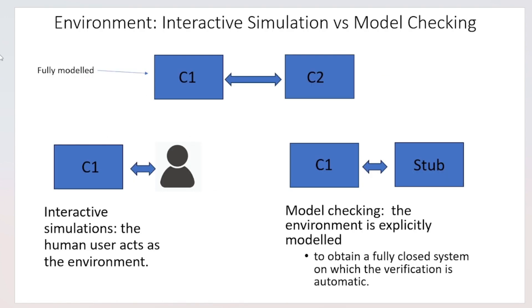We discuss the difference between interactive simulation and model checking. Assume component C1 is fully modelled while C2 is treated as environment. In MBSD, validation is mainly carried out through interactive simulations — a form of graphical debugging where the user takes the role of the environment and sends signals to C1 pretending to be C2. In model checking, we need a stub model of C2 to obtain a fully closed system for automatic formal verification. The stub models the scenarios in which we are verifying the model.